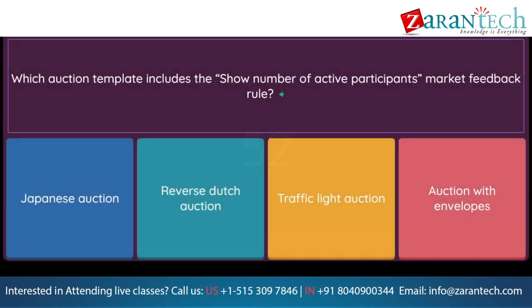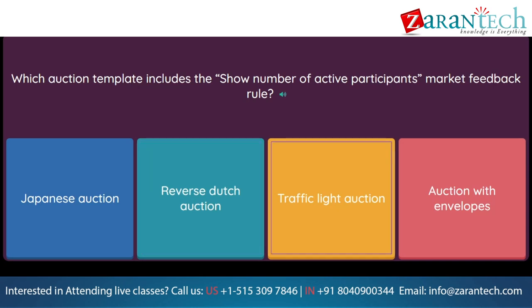Question: Which auction template includes the show number of active participants market feedback rule? Option 1: Japanese auction. Option 2: reverse Dutch auction. Option 3: traffic light auction. Option 4: auction with envelopes.